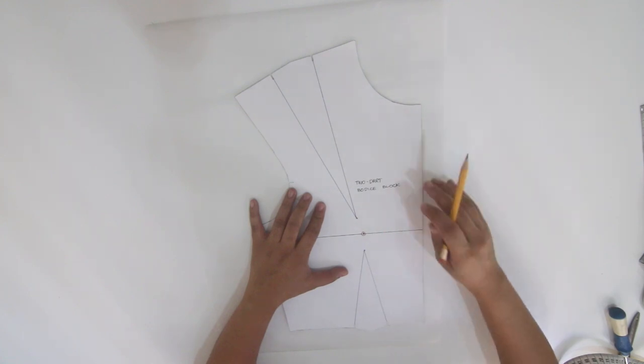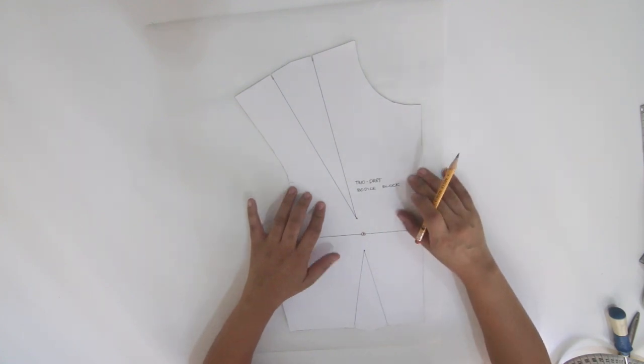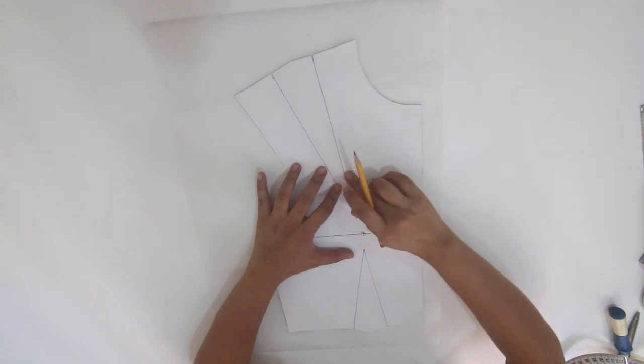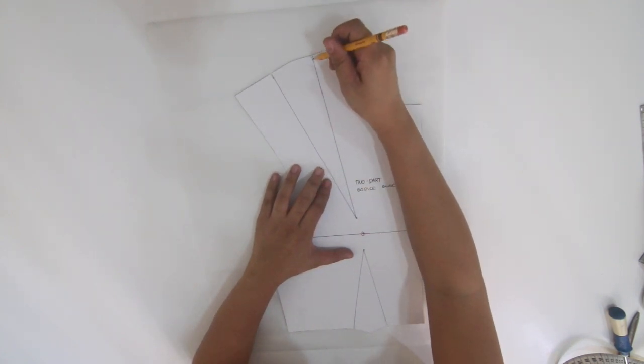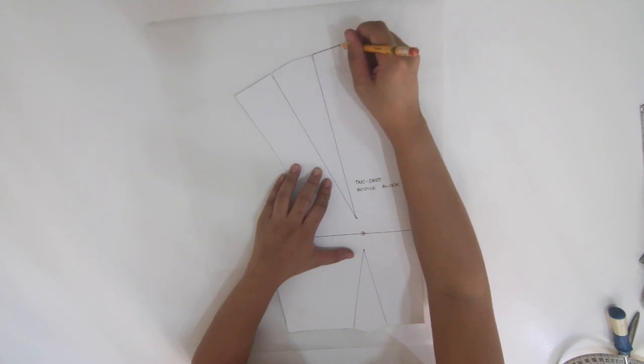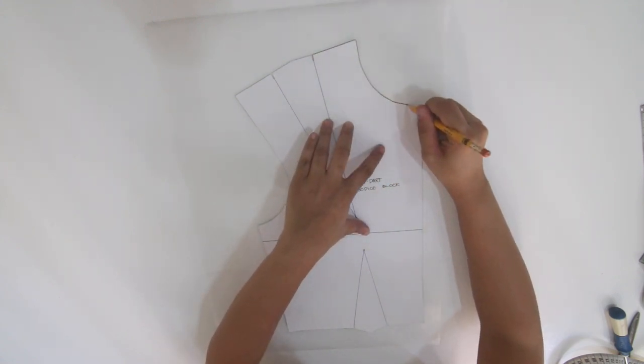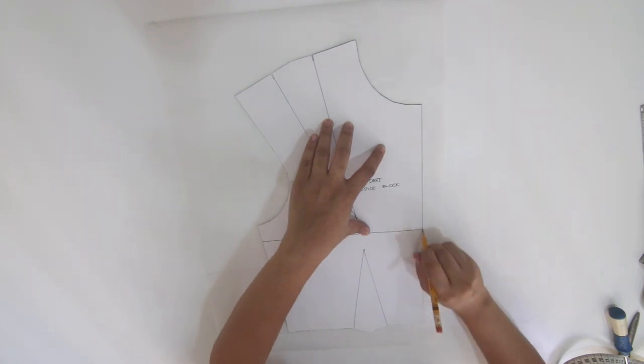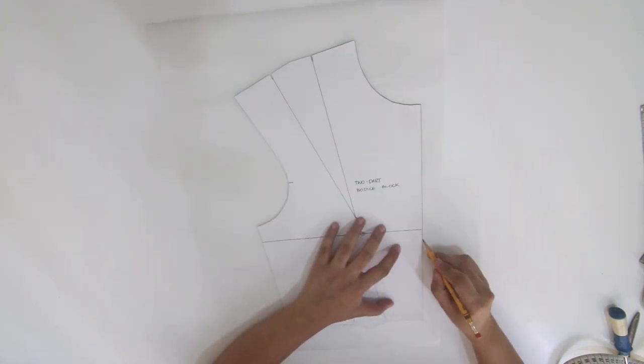To start the pivotal technique of dart manipulation, choose the leg closest to the high point shoulder. We trace around the perimeter of the block, down to the neck and center front until we reach the first leg of the waist dart.